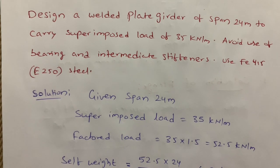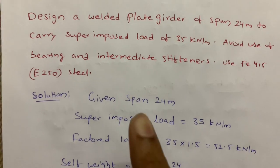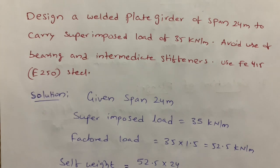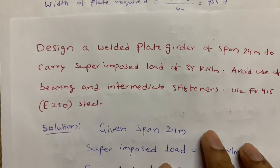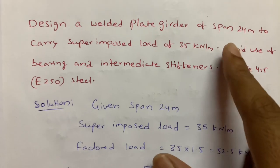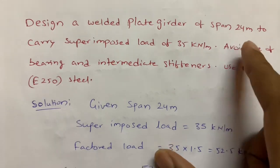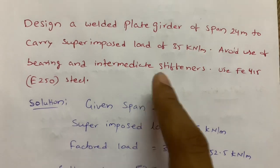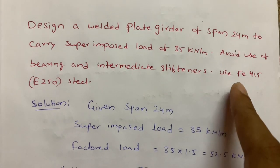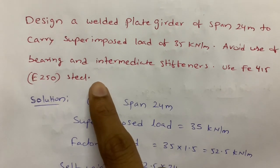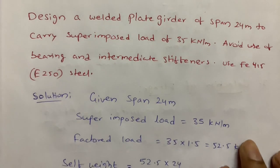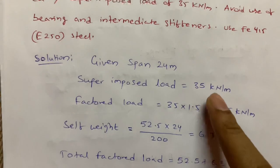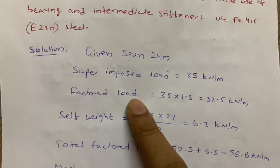Hello everyone. In this video I'm going to explain the design of a welded plate girder, which is useful for engineering students as an essay-type question in Design of Steel Structures. The given question: span is 24 meters, live load is 35 kilo Newton per meter. We are not using end and intermediate stiffeners, and the steel is Fe415 / E250. These types of plate girders are used in bridges.